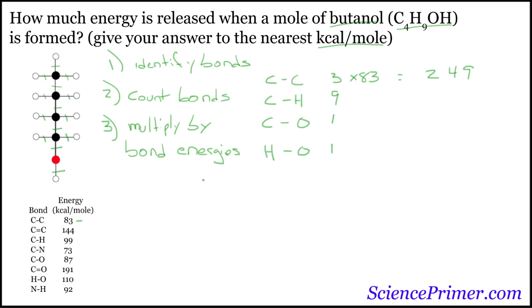We have 9 carbon-hydrogen bonds, and there are 99 kilocalories per mole associated with this bond type. So it's 9 times 99, which equals 891.